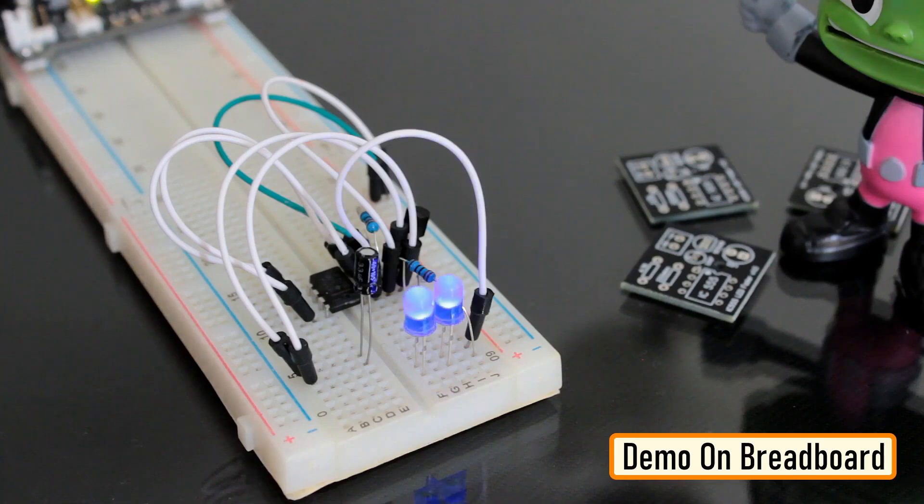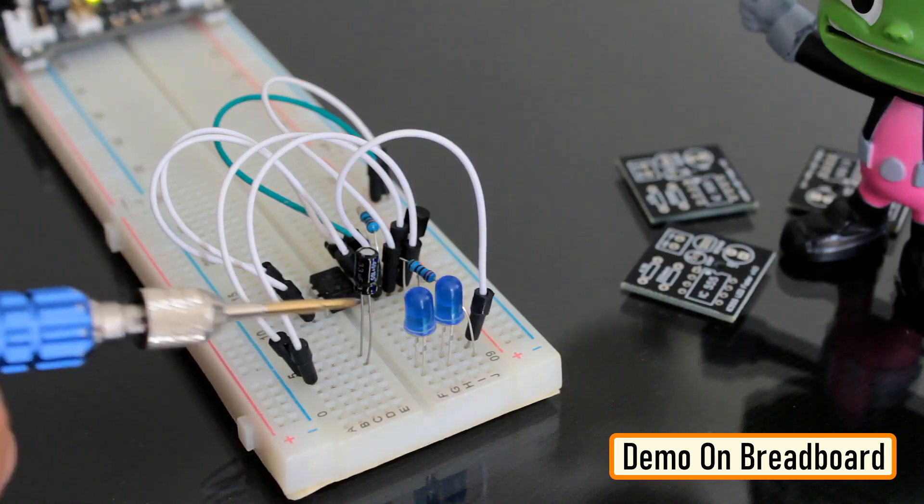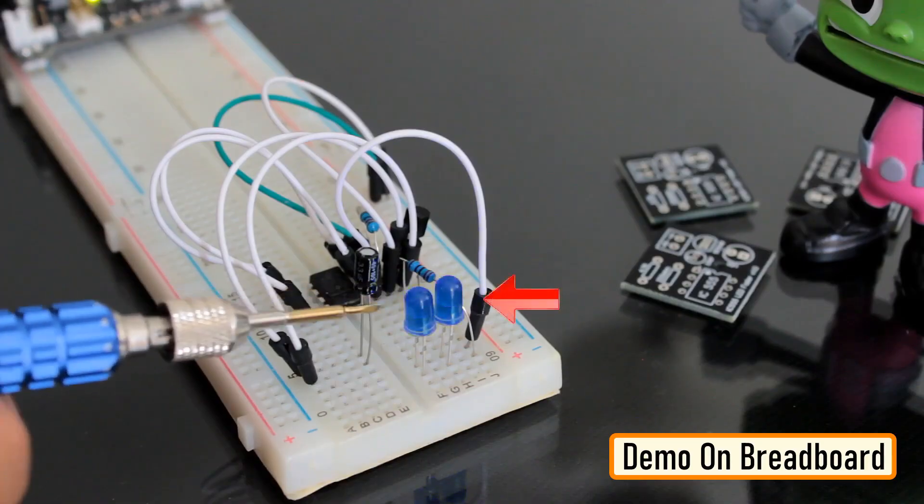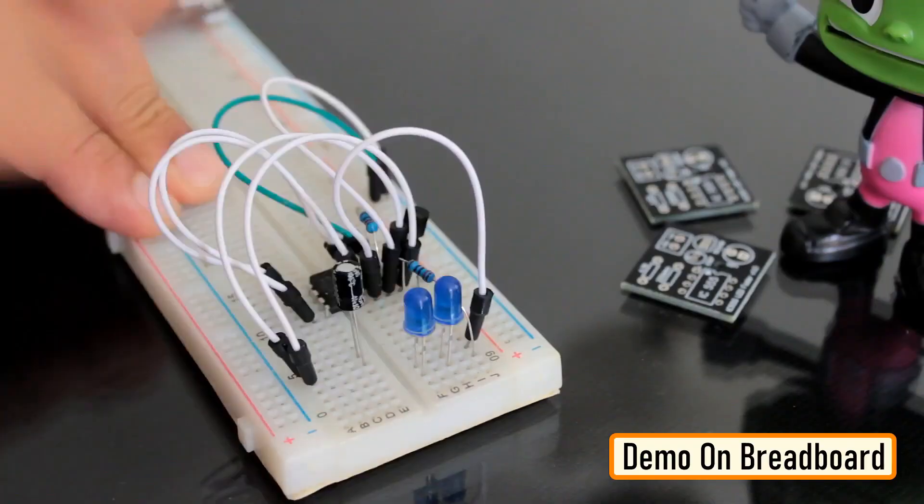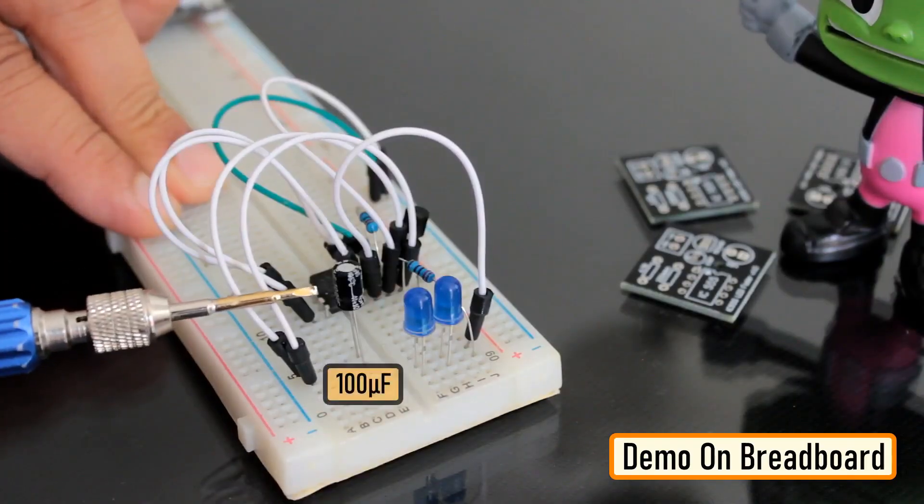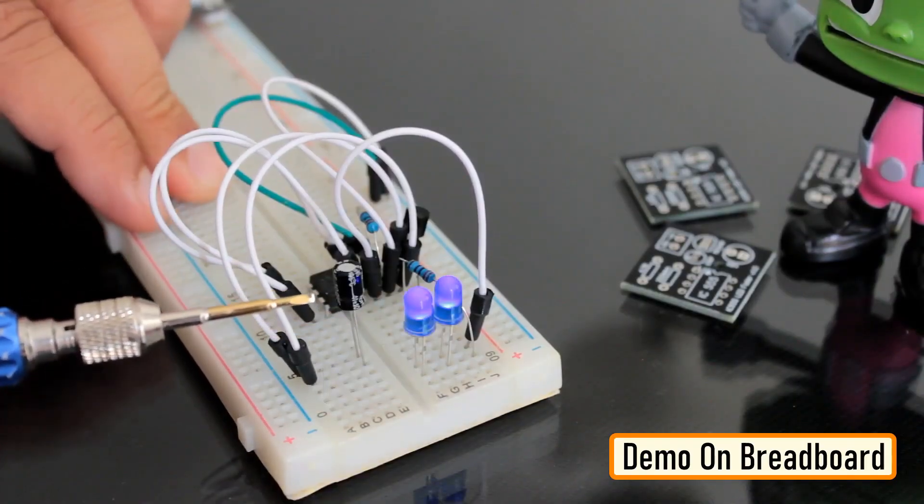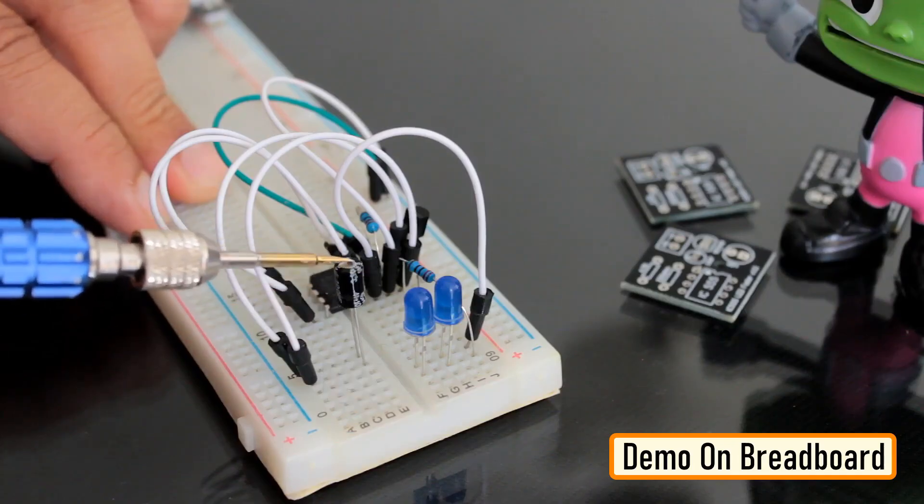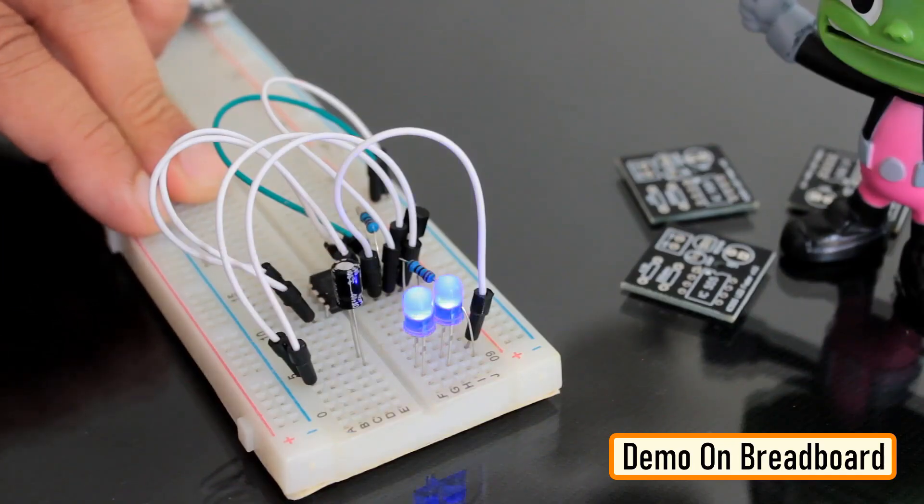So, here is a quick demo on a breadboard. In the current setup, I have a 33 microfarad capacitor and a blue LED on the breadboard. Replacing the 33 microfarad capacitor with a 100 microfarad capacitor makes the LED fade in and out slower as the 100 microfarad capacitor charges and discharges slower than the 33 microfarad capacitor.